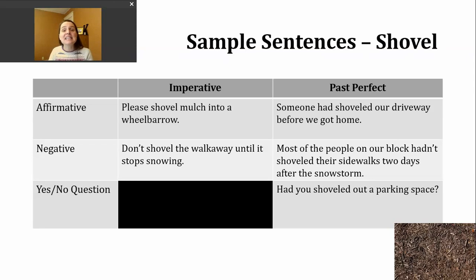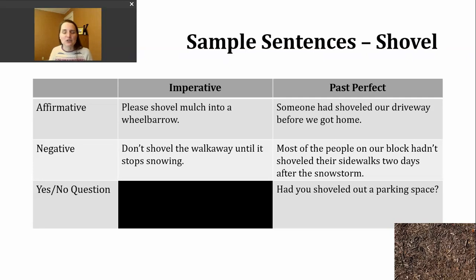Here's an example of a negative imperative: Don't shovel the walkway until it stops snowing. In large snowstorms, sometimes you'll see people go out and do a little bit every few hours, thinking that's going to be easier than moving several inches of snow all at one time.